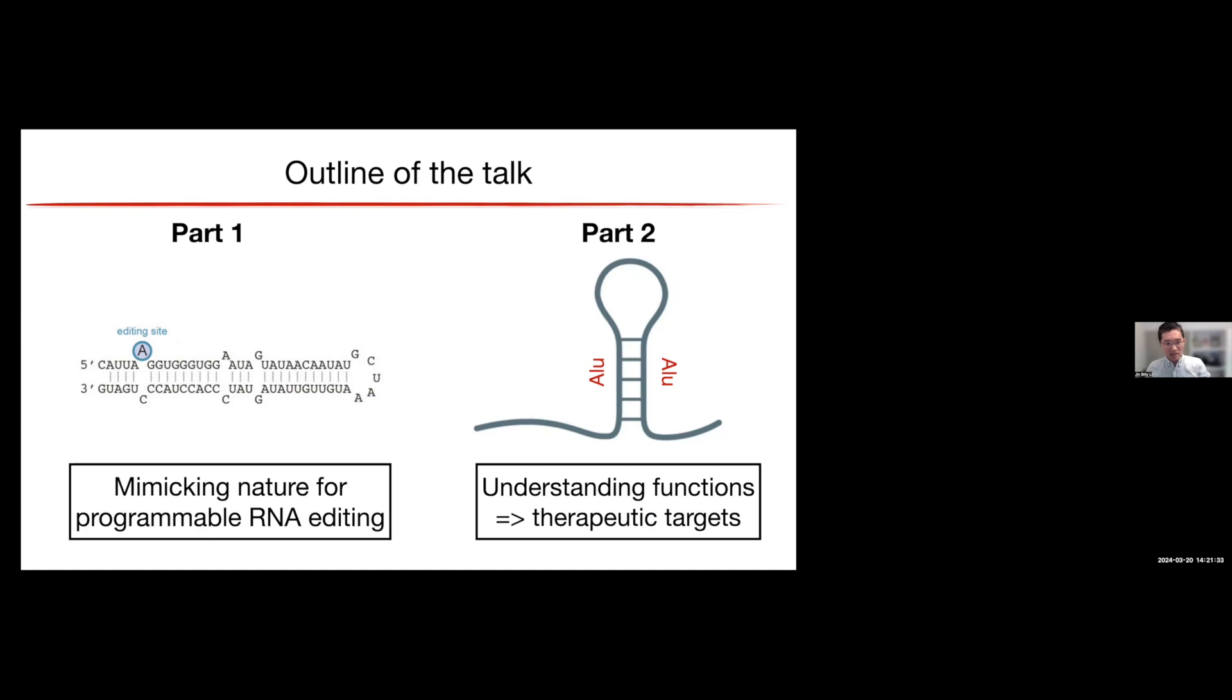So I want to focus on part one. Now we know this kind of naturally occurring short double-stranded RNAs that can be edited specifically and efficiently. So then, we're trying to figure out how to mimic whether this happens in nature and maybe for programmable RNA editing. The second part, if I have time, I will tell you essentially we try to understand the function of these editing events for long double-stranded RNAs primarily formed by repeats. By understanding that from these functions, we really think there are some very interesting, exciting therapeutic applications.